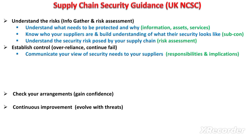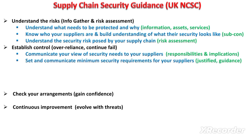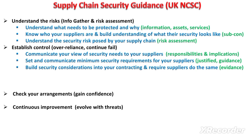The fifth principle is to set and communicate minimum security requirements to your suppliers. These requirements should be justified and will provide guidance to your suppliers. The sixth principle is to build security considerations into your contracts and require your suppliers to provide evidence related to the supply chain security controls implemented by them.